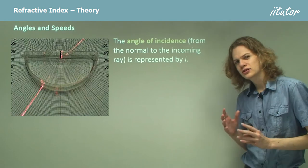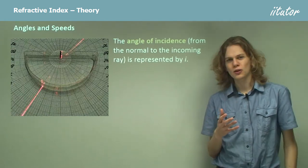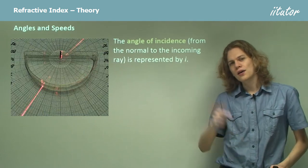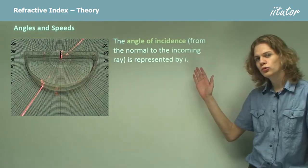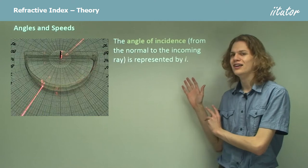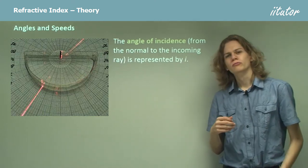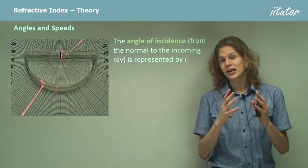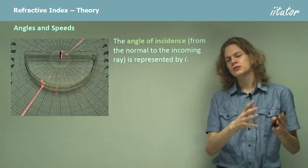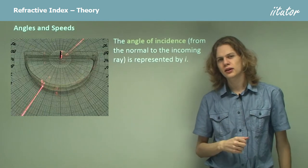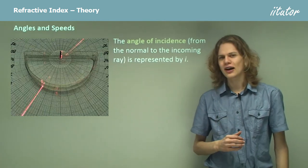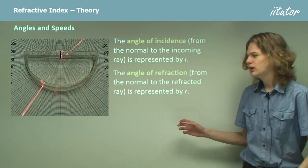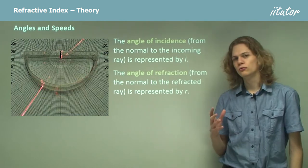The angle of incidence is something we also use with reflection — it's the angle between the normal to the surface and the incoming ray. When talking about refraction, we represent this by I. For reflection, the angle of reflection equals I, because the angle of reflection must equal the angle of incidence. But it's not quite the same for refraction, so we use a different letter, R, to measure the angle of refraction.